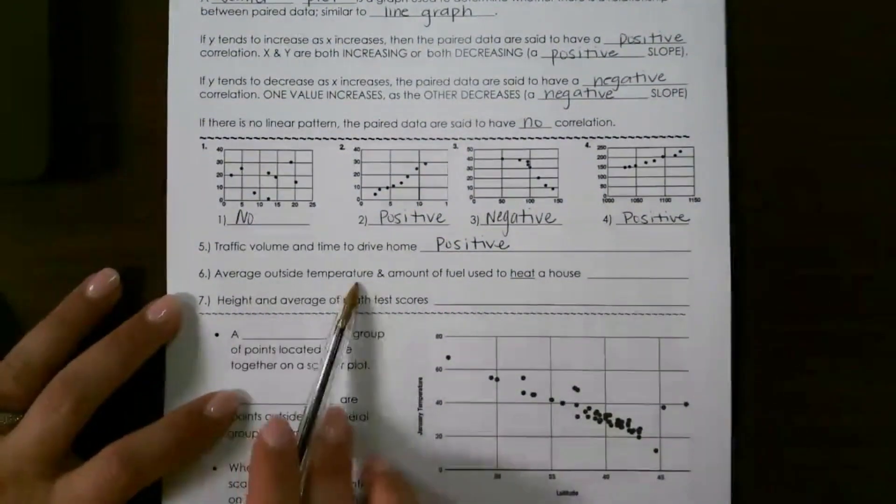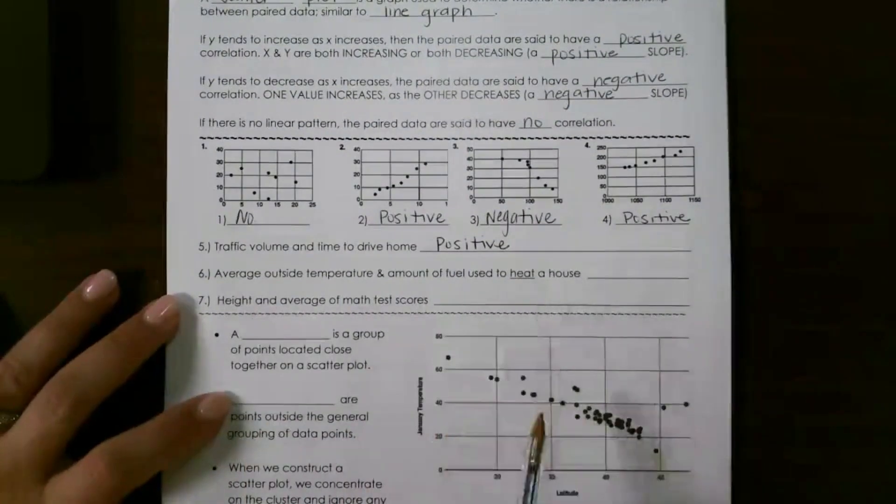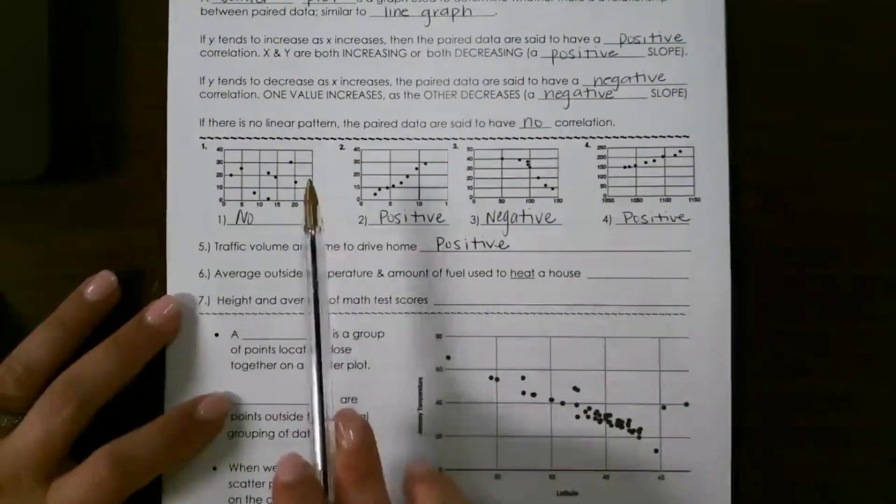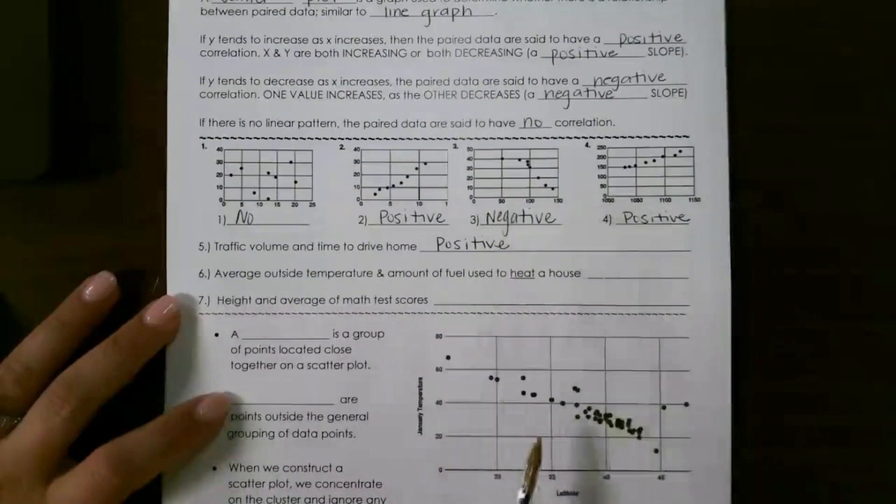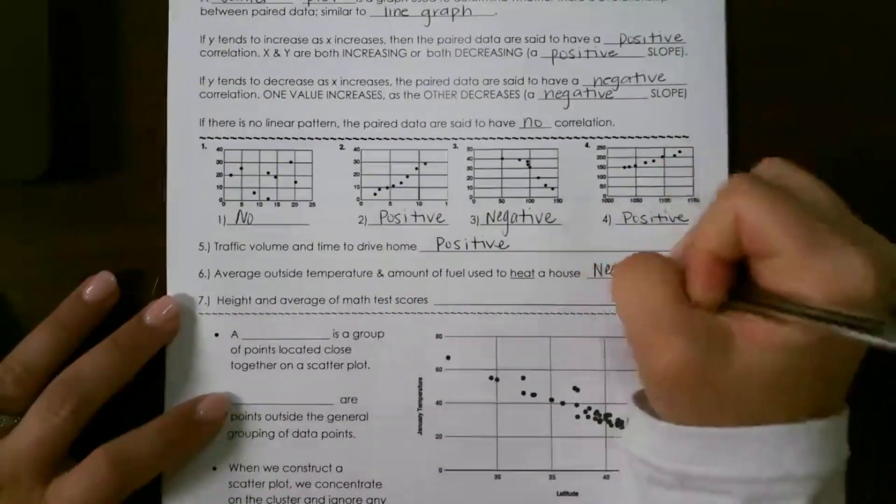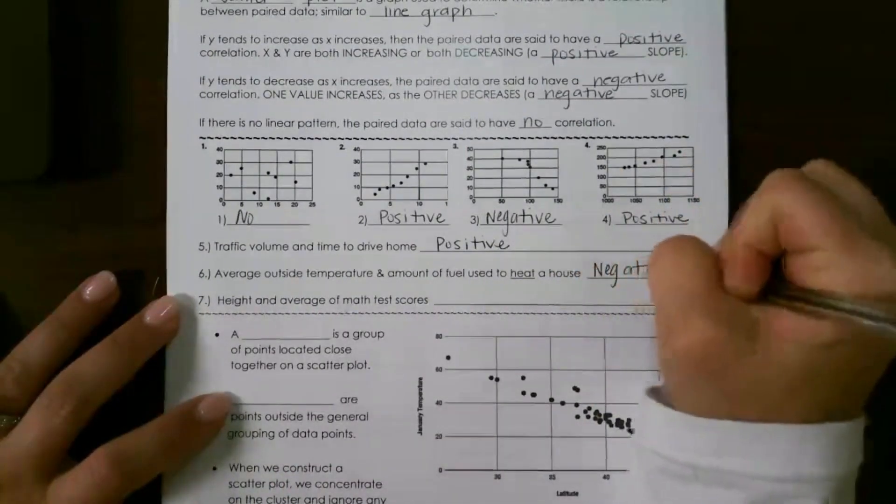The average temperature outside and the amount of fuel used to heat a house. As the temperature rises, the amount of heat you use lowers. So that means it would be negative because one is increasing as the other decreases.